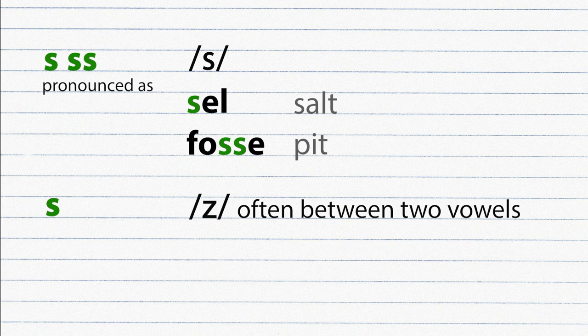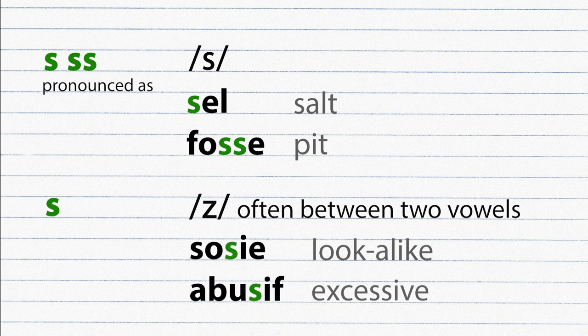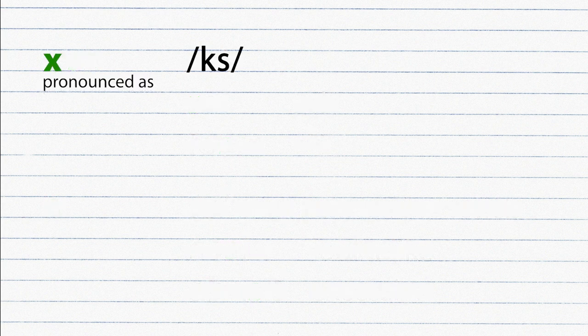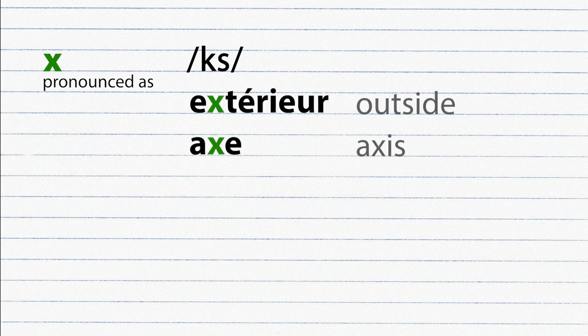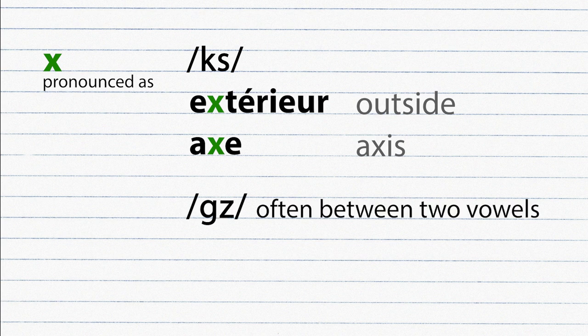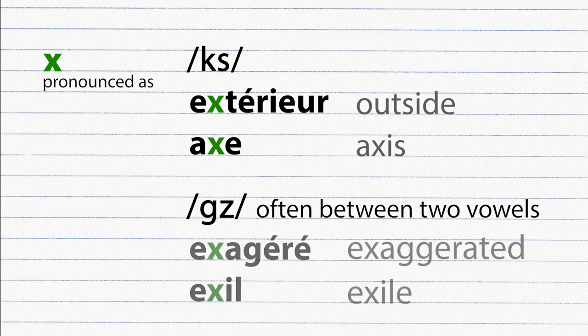X is pronounced as X. Extérieur, axe. But often between two vowels is pronounced as. Exagéré, exil.